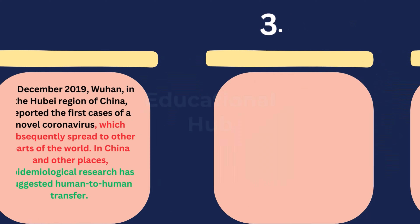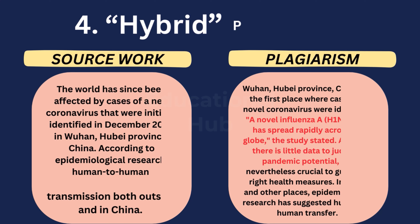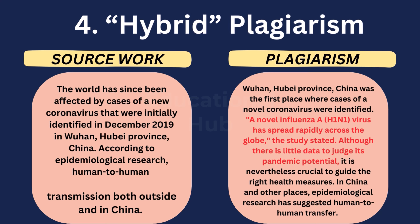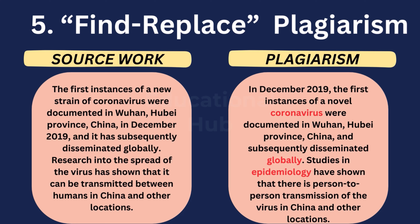3. Control plus C Plagiarism: When a written document contains a large amount of text taken from a single source without any changes, this is known as the type of plagiarism similar to using Control plus C. 4. Hybrid Plagiarism: The hybrid form of plagiarism involves copying and organizing perfectly cited source materials into a new document without providing proper citation. 5. Find-Replace Plagiarism: The act of substituting the frequently used terms and expressions in the duplicated material without modifying the core document is termed as find and replace, a form of plagiarism.